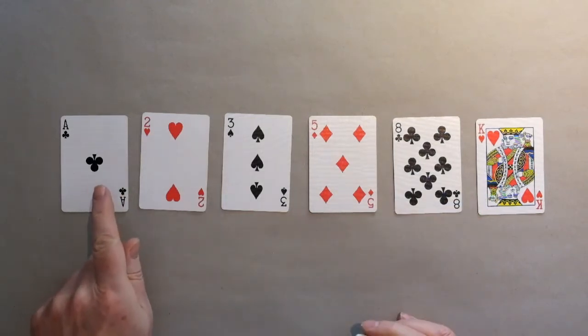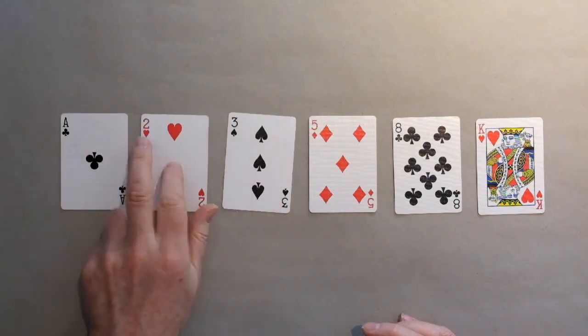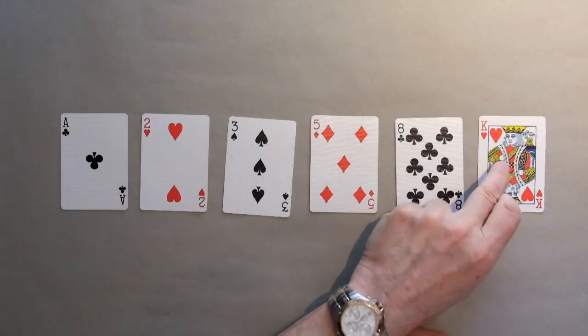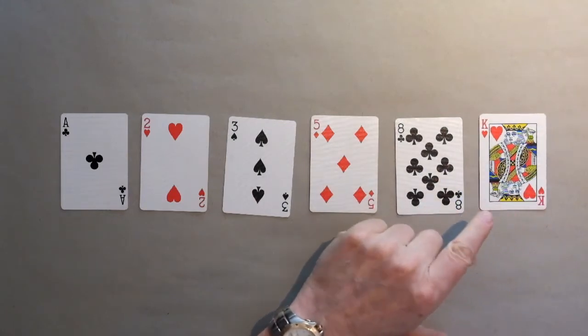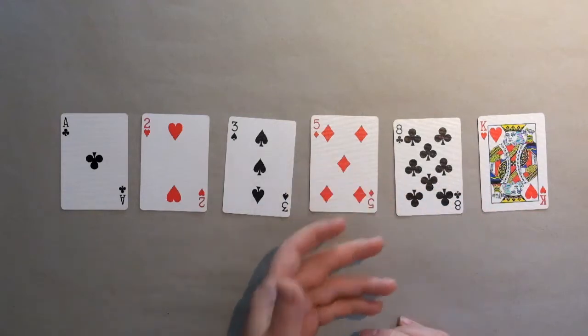The ace, by the way, is worth one. So, three is the sum of one and two, five is the sum of two and three, eight is the sum of three and five, and thirteen, which is the king's value, is the sum of five and eight. So, the king is worth thirteen, a jack is worth eleven, a queen is worth twelve. You'll be mentioning that to your spectators later.